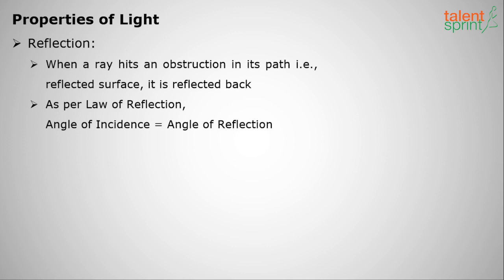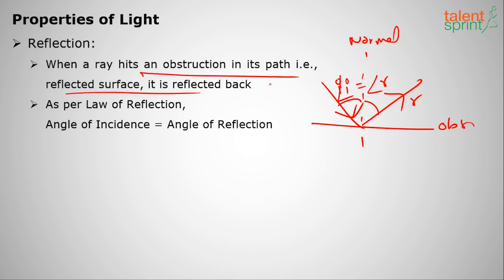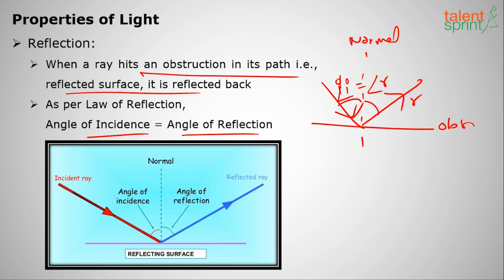The first property of light is reflection. Whenever a light ray is incident on a reflecting surface or obstruction, it gets reflected back. The incident ray, reflected ray, and normal are involved, and the angle of incidence is always equal to the angle of reflection — this is the law of reflection.